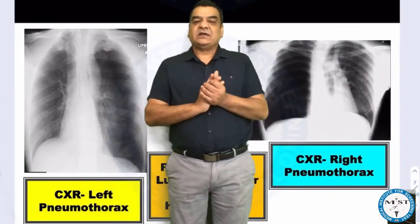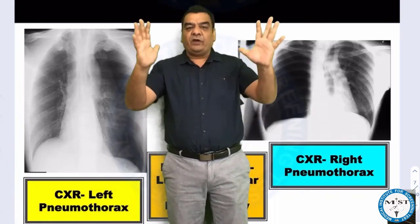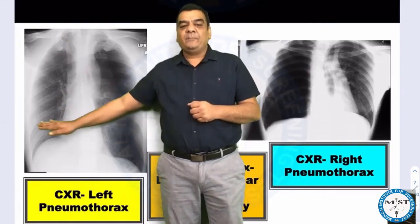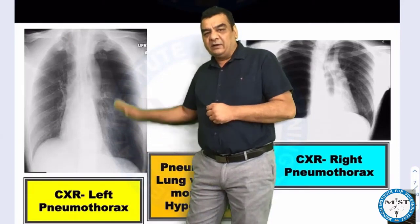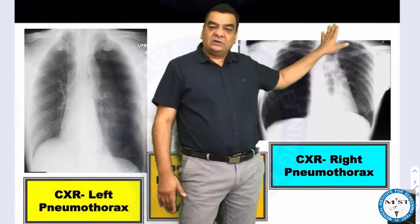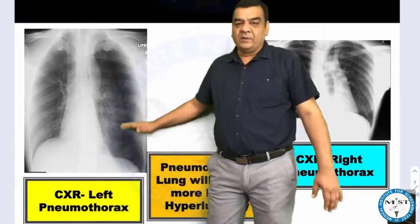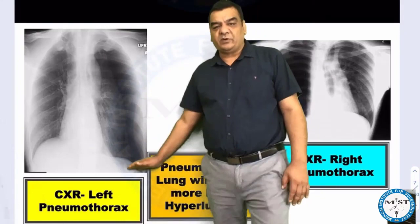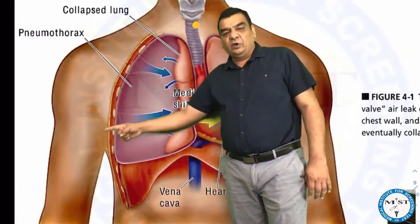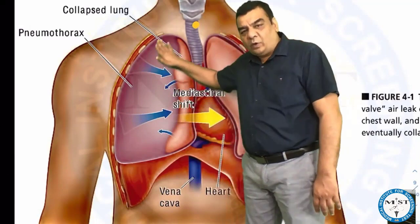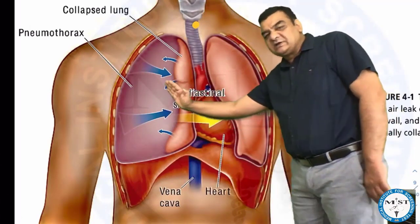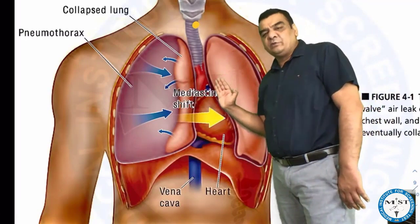Looking at these X-rays — as you also see in radiology classes — the crux is that air appears more black. In this particular case, one side is less black but the other is more black, meaning more air has collected there. This is the story of pneumothorax. In tension pneumothorax, a huge amount of air is going in and getting collected, pushing the lung and causing tracheal deviation — that mediastinal shift is the key sign of tension pneumothorax.